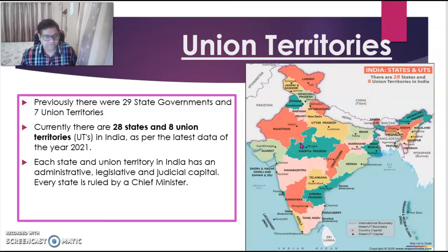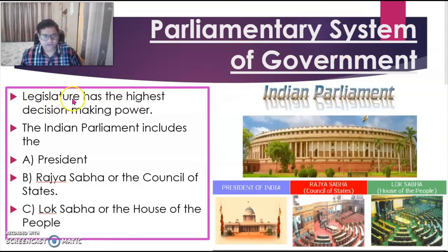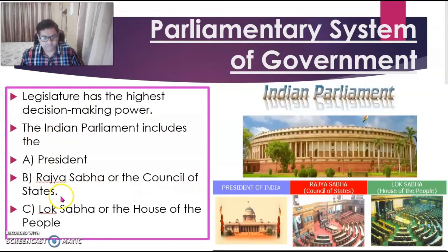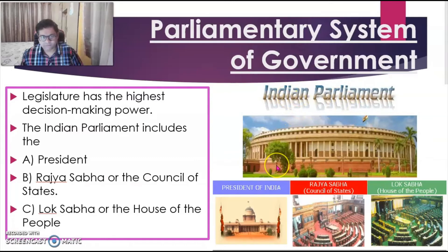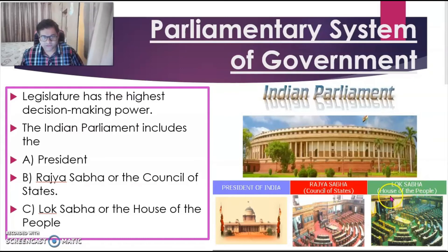Now let us go to the next topic: the Parliamentary System of Government. The legislature has the highest decision-making power. Legislature means the Parliament. The Parliament includes the President, Rajya Sabha or Council of States, and Lok Sabha or the House of the People. Here is a picture of the Indian Parliament. Under that, there is the President of India, the Rajya Sabha or the Council of States, and lastly the Lok Sabha — that is the House of the People.